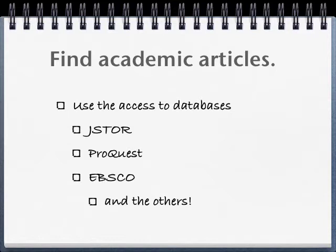In order to find support for your argument, you need evidence. For an academic piece of writing, you must find academic articles to support what you're going to be saying. Use the access that we have to the databases — JSTOR, ProQuest, EBSCO — they're fantastic places to start, but use the others too. All of the databases have specializations of some kind and different search ranges, so using all of them will give you a broader range of articles.